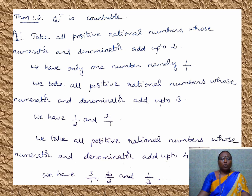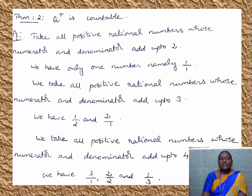Now let us see Theorem 1.2: Q⁺ is countable. What is Q⁺? It is the set of all positive rational numbers. We are going to prove that Q⁺ is countable. We know Q⁺ is not finite — it is infinite. So we have to prove that Q⁺ is countably infinite. To do this, I can either form a bijection from Q⁺ to N, or list the elements of Q⁺ as a first element, second element, and so on. We will use the second method. Let us start the proof.